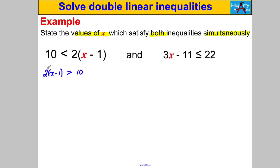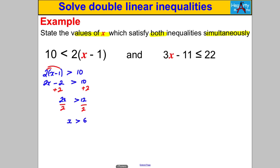Since these are two separate inequalities, I'll put X on the left-hand side. Rewrite the first as 2(x − 1) > 10. Expand to get 2x subtract 2 is bigger than 10. Add 2 to both sides: 2x > 12. Divide by 2: X is strictly bigger than 6.